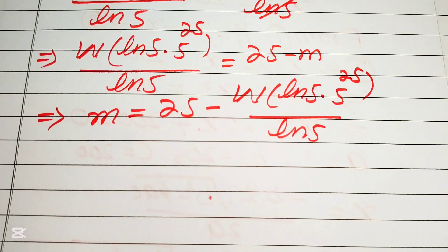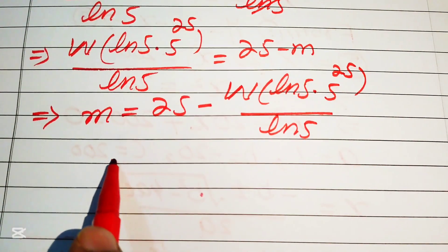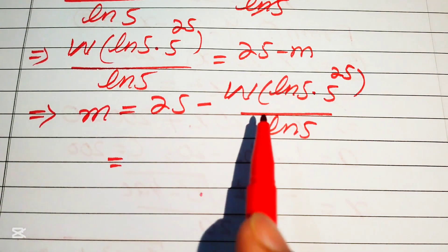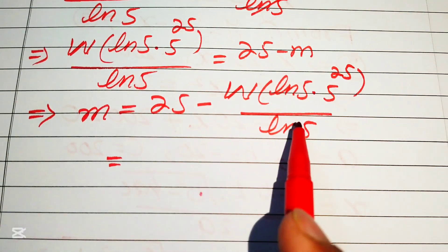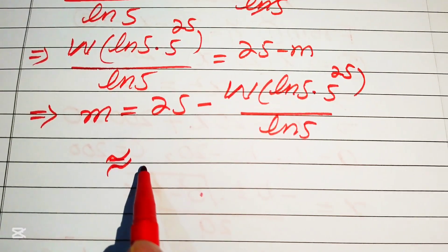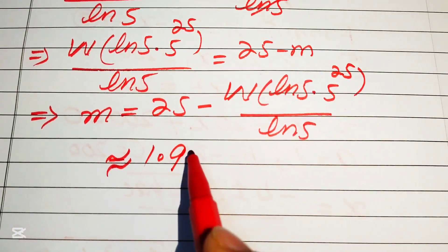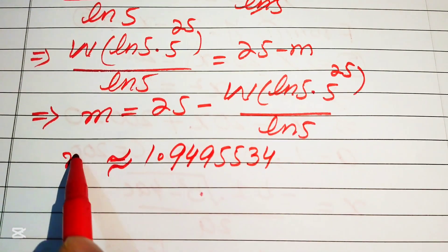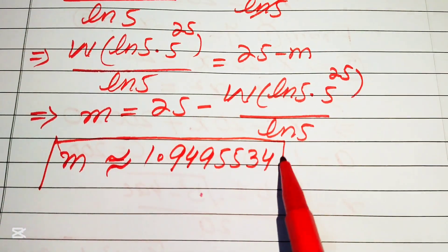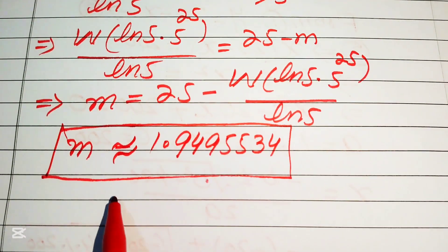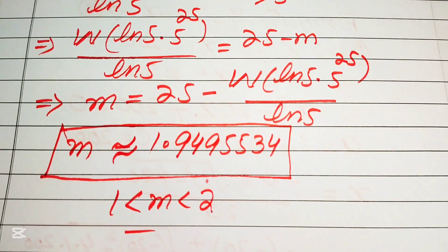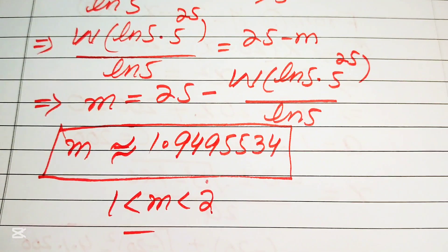To find the numerical value, we apply the Lambert W function using a calculator or Wolfram Alpha. The approximate value of m is 1.949553​4. We can confirm this lies between 1 and 2, which matches our earlier interval. This is the final value of m. Thank you so much for watching — please subscribe to my channel for more exciting videos.